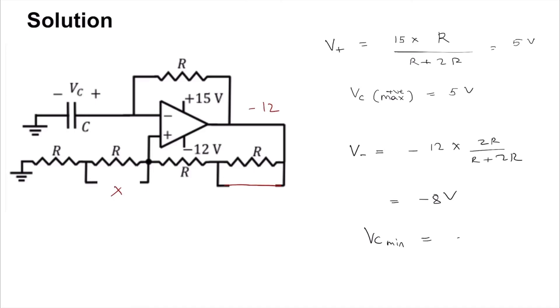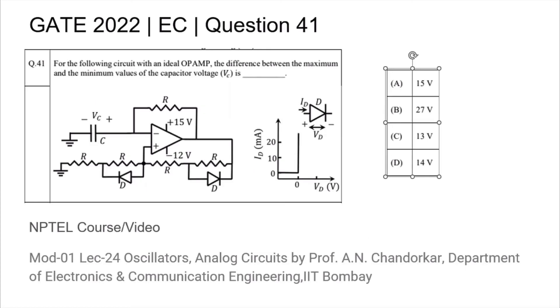Therefore, the delta VC is going to be 5 minus minus 8, which is 13 volt. Thus, the answer is 13 volt, which is option C.